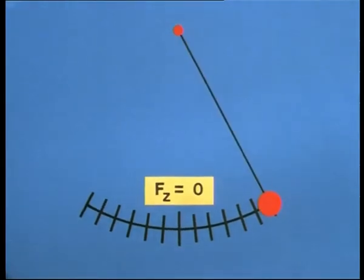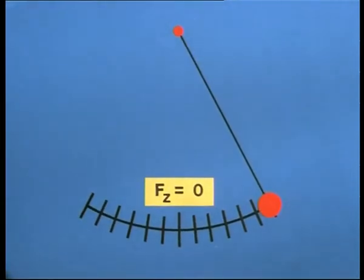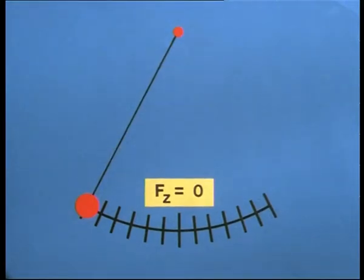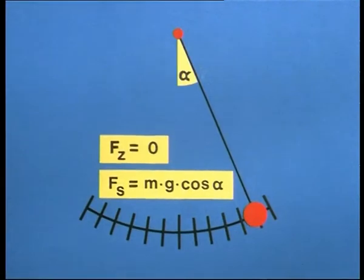At the reversal points, the centrifugal force equals zero because the velocity is equal to zero. And besides this fact, along the thread only the component of the weight mg cos alpha is acting. That means, at the reversal points, in total, a smaller force is drawing than at the centre point.